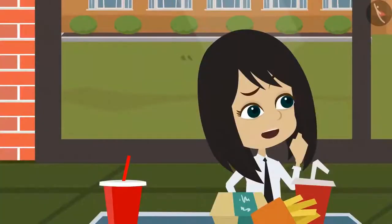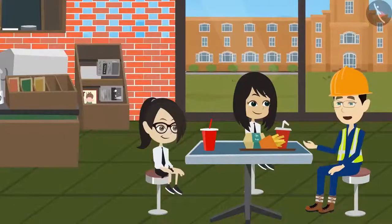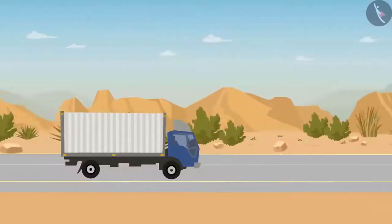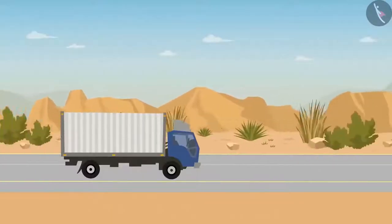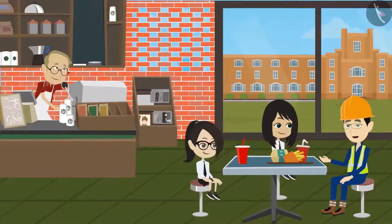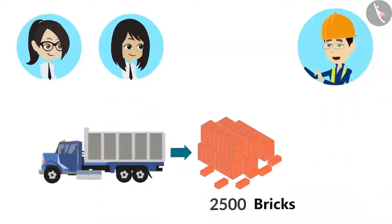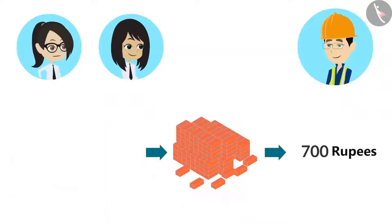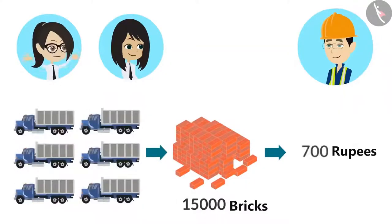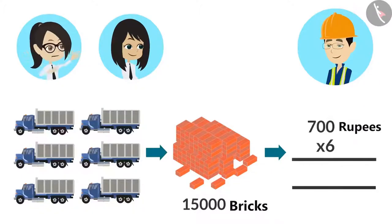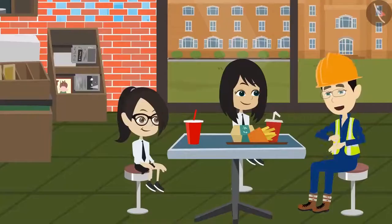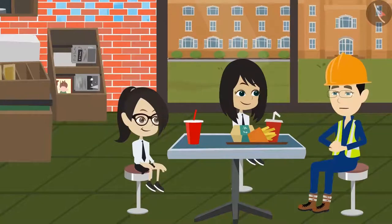Transportation charges? Yes. Trucks are used to transport bricks from the furnace to the construction site. The trucks that transported bricks for your canteen charged Rs. 700 for one round. This means for 6 rounds, we have to multiply 700 by 6, which equals 4200. Yes, you are absolutely right, Vandana.